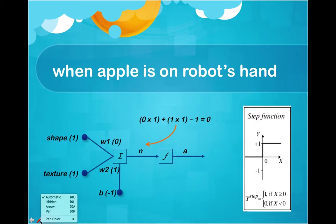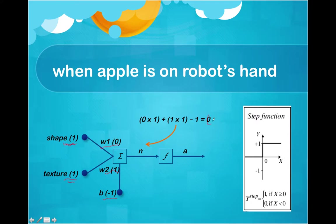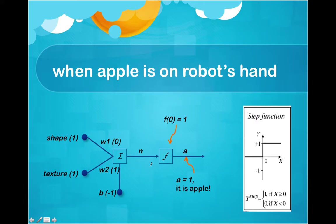When the apple is in the robot's hand, the shape is 1 (round) and the texture is 1 (smooth). So 1 times 0 is 0, and 1 times 1 is 1, plus bias minus 1, so this net input is 0. From the activation function, a net input of 0 returns 1, and output 1 predicts apple, so the robot predicts apple perfectly.